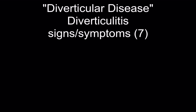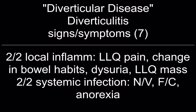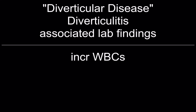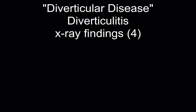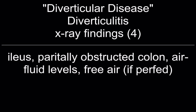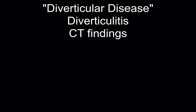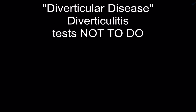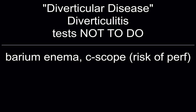Signs and symptoms of diverticulitis: local inflammation — left lower quadrant pain, change in bowel habits, dysuria, left lower quadrant mass; systemic infection — nausea, vomiting, fever, chills, anorexia. Lab findings: increased WBCs. X-ray findings: ileus, partially obstructed colon, air-fluid levels, free air if perforated. CT findings: swollen edematous bowel wall, especially helpful in diagnosing abscesses. Do NOT do barium enema or colonoscopy (risk of perforation). Best test: CT scan.